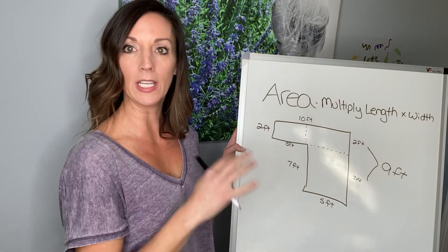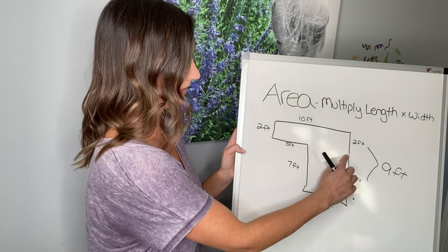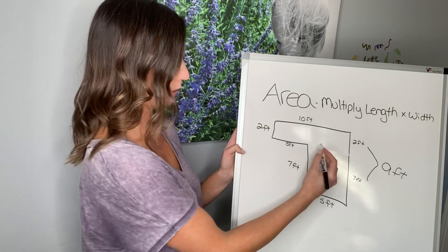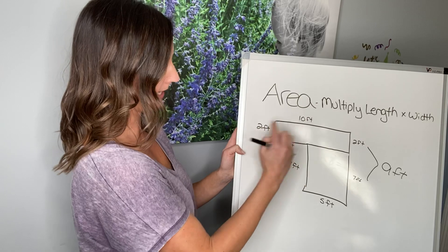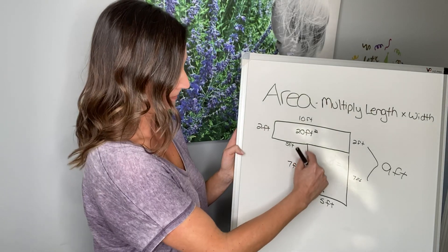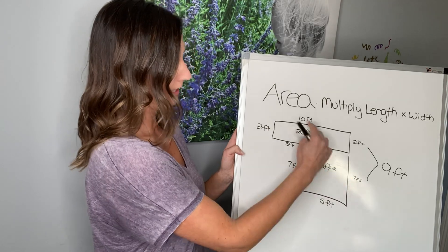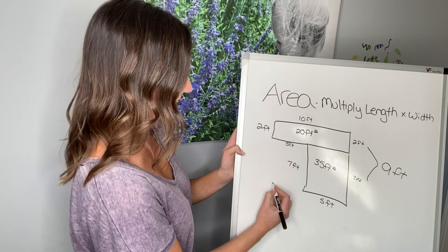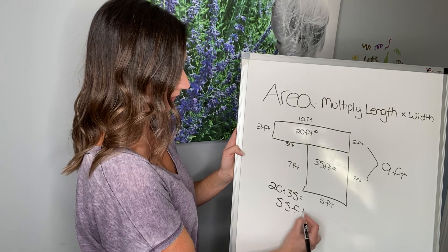So now having all of these, we can do area a couple different ways. I'm going to erase these — I just wanted to show you how we found those missing side lengths. You can decide to decompose the shape this way or this way. I'm going to go this way because I like to multiply by ten — it's easy for me. So I'm going to do ten times two equals twenty feet squared. And then this one would be seven times five — seven times five equals thirty-five feet squared. Now my total area of this shape is twenty plus thirty-five, which gives us fifty-five feet squared.